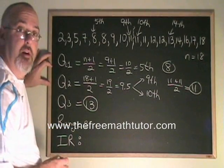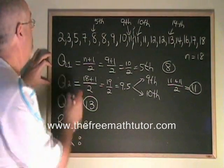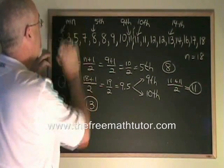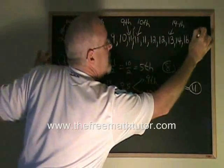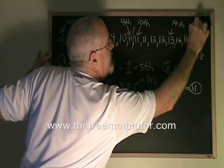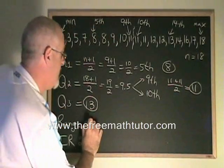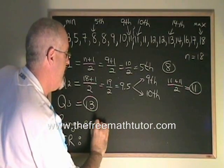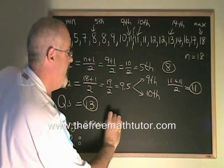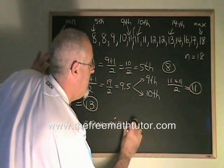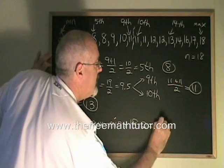To find the range, we need to know the minimum and maximum data values. So let's point them out as well. Our minimum is 2, and our maximum is 18. Range is equal to maximum minus minimum, which in this case is equal to 18 minus 2, 16.